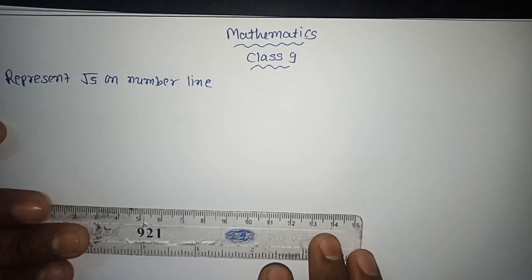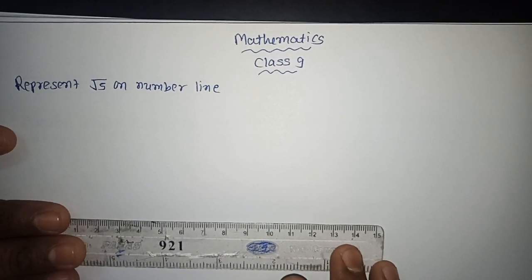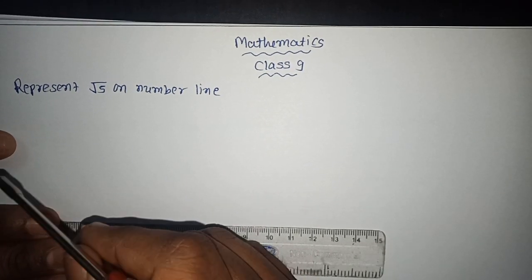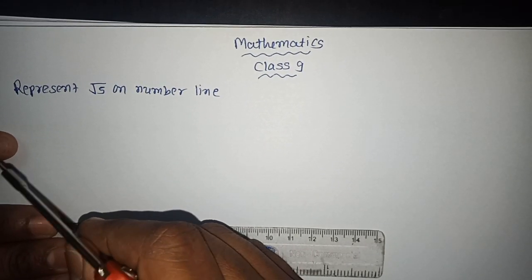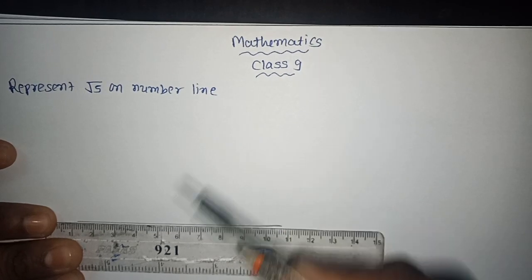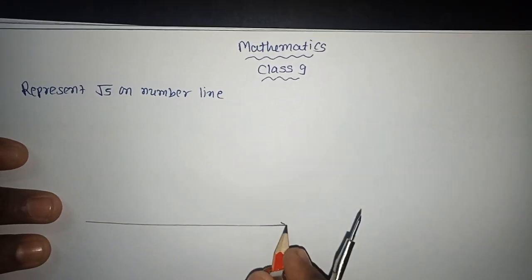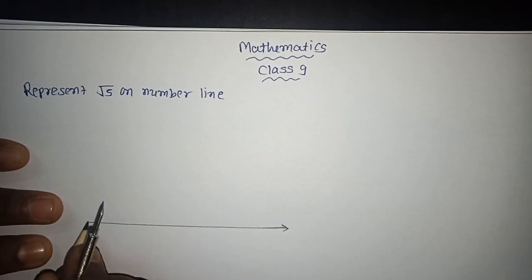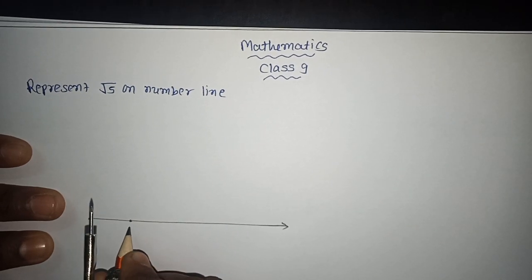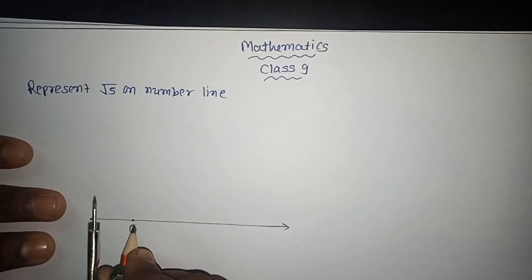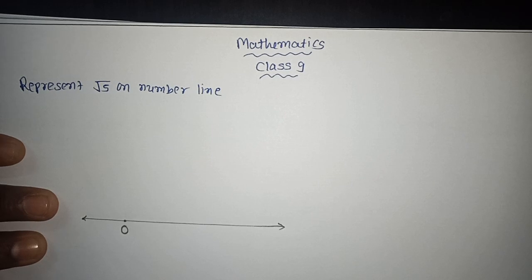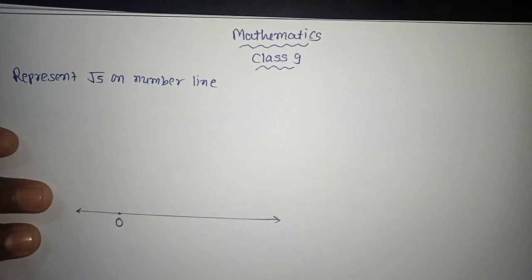First of all, I'll draw the number line. This is a line. Now I will consider one point to be the origin. Origin is always considered as O, so I put the point over here that is equal to O.